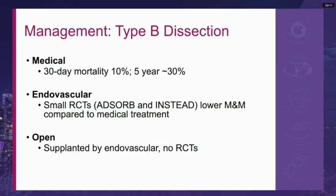Traditionally, type B dissection was treated with open repair; however, endovascular therapy has largely supplanted open repair and is associated with lower morbidity and mortality. Optimal medical management alone is associated with a 30-day mortality rate of 10% and a mid-term mortality rate of approximately 30%. The ADSORB and INSTEAD trials both showed lower mortality and morbidity compared to medical management alone. There are no randomized controlled trials evaluating endovascular versus open repair.